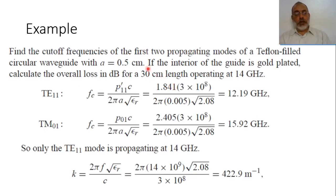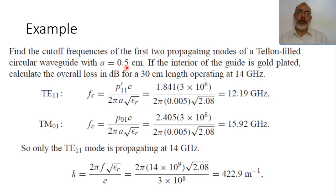Example: Find the cutoff frequencies of the first two propagating modes in a Teflon-filled circular waveguide with radius A equals 0.5 cm. If the interior of the guide is gold-plated, calculate the overall loss in dB for 30 cm operating at 14 GHz. Teflon has a dielectric constant of 2.08.